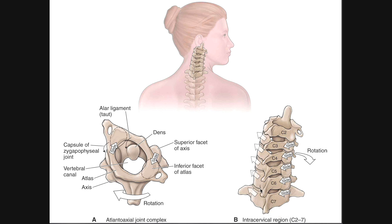So with upsloping on the left, we're going to see three things: one, in the zygapophyseal joints the articulating surfaces get a little bit further apart; two, the anterior annulus fibrosus is going to be a little bit compressed; and three, we're going to see a little bit of anterior translation of the vertebra above relative to the vertebra below. Conversely, on the right side with downsloping, we see the opposites.